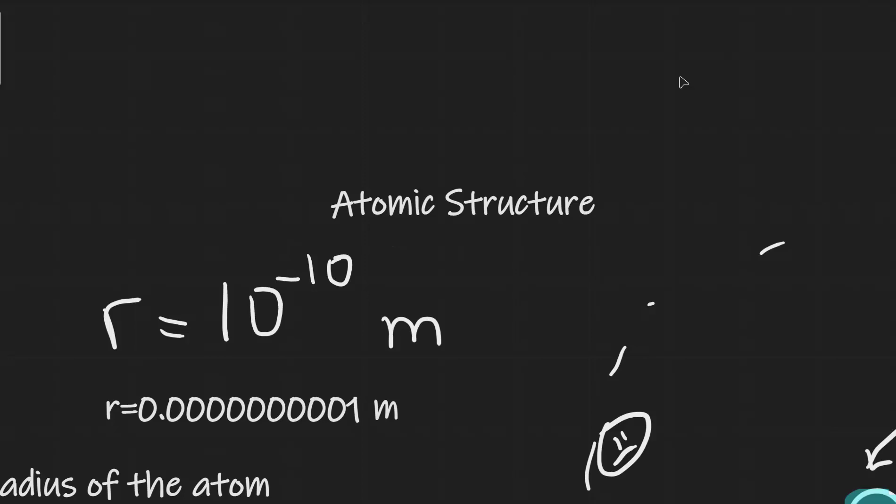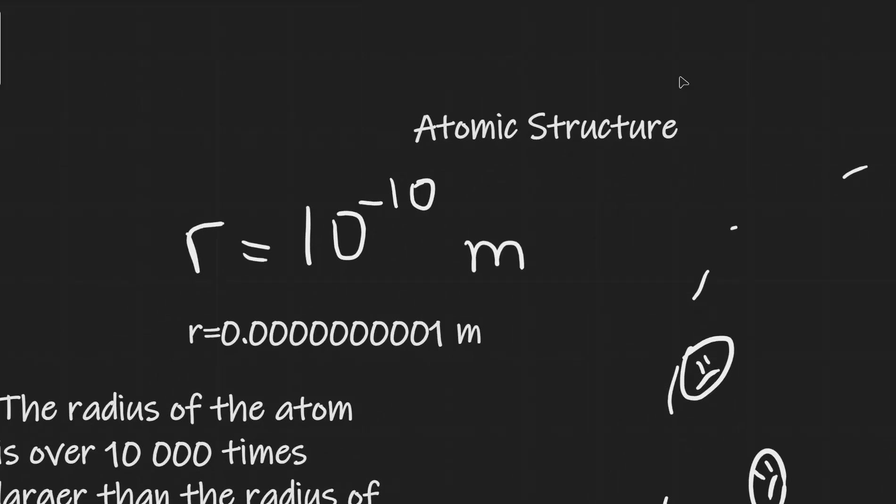First of all, how big or should I say how small is an atom? The answer is approximately 10 to the power of minus 10 meters. So this is 0.000000001 meters. An atom is tiny.